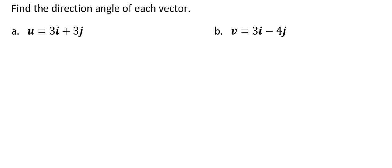From what we know about finding our direction angle, we know that the tangent of theta equals b over a. In this case, b is the number in front of j, and a is the number in front of i.